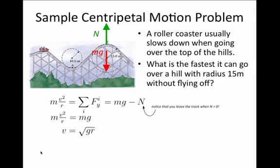And we find that the velocity at maximum is the square root of g times r, the radius of curvature. If I plug in that g is roughly 10 meters per second squared and r the radius of curvature in this problem is 15 meters,